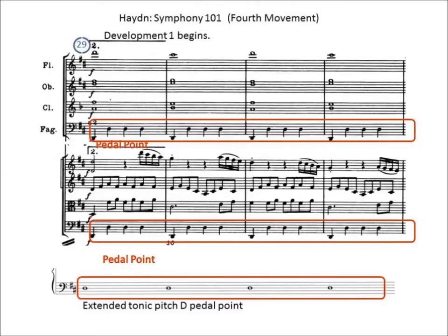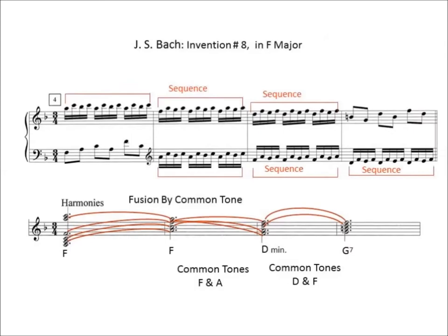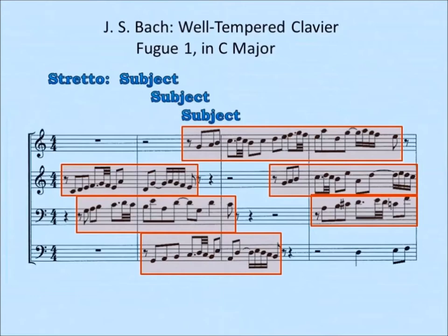The emphasis is on the macro with occasional micro-references. The music analyzed includes eight of Bach's inventions, two of his Sinfonias, two Preludes, and three Fugues, and Haydn's Symphony 101.